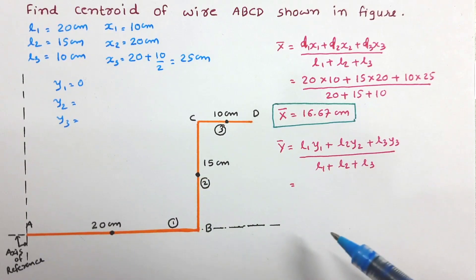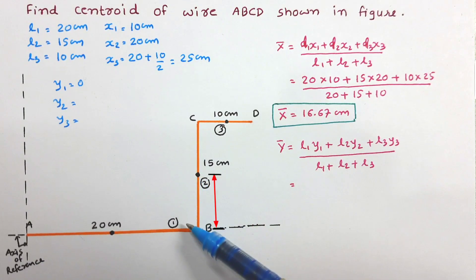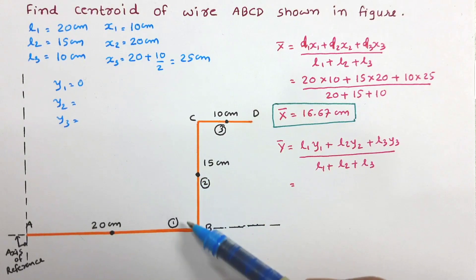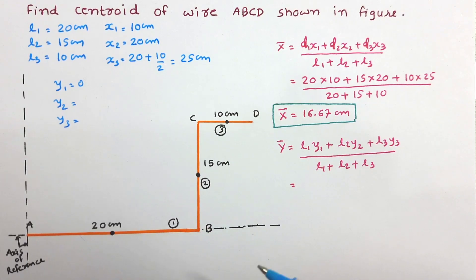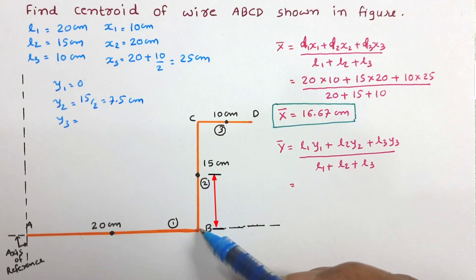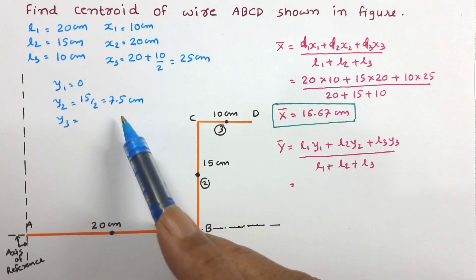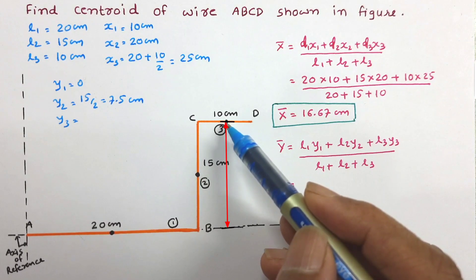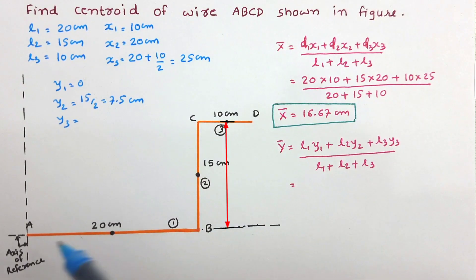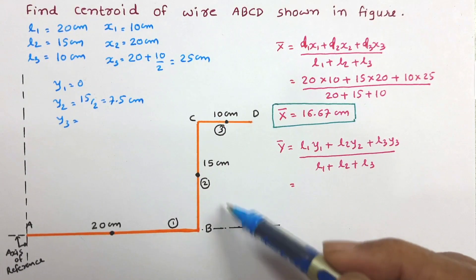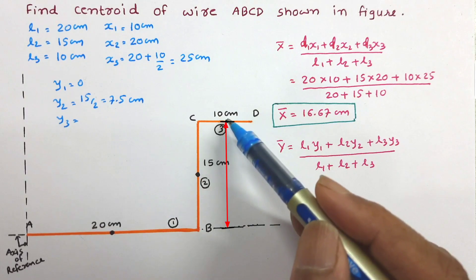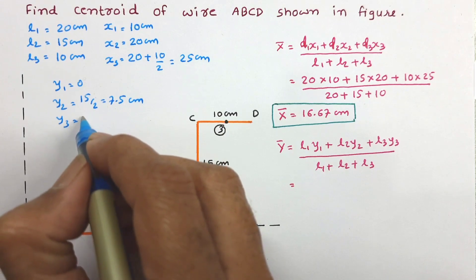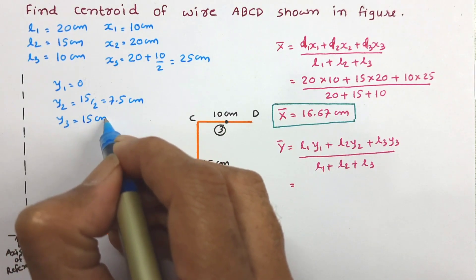Now y₂ is the distance of centroid of second wire from reference x axis. As this is the center point of wire, this distance will be half of it. So y₂ will be half of 15, that is 7.5 cm. Now y₃, that is centroid of third wire from reference x axis. From the figure it is very clear that this distance is 15 cm. So we can write y₃ is equal to 15 cm.